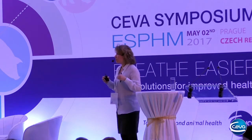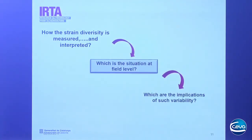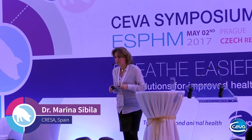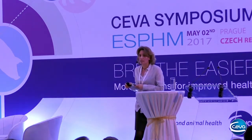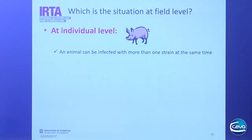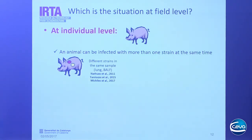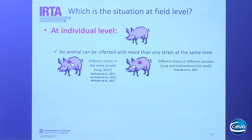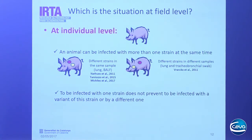Now that we know how to interpret results, let's look at the field situation. I will give information at three levels: individual, herd, and regional, and also what we found at the slaughterhouse. At the individual level, we know that an animal can be infected with more than one strain at the same time. We can detect different strains in the same sample — more than one strain in the lung — but also different strains in different samples simultaneously: one strain in the upper respiratory tract and another in the lower respiratory tract.